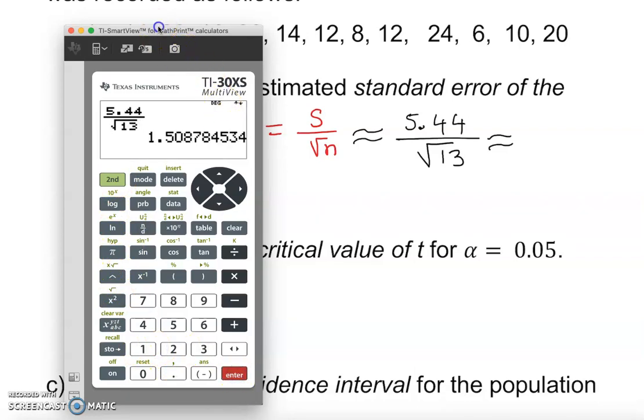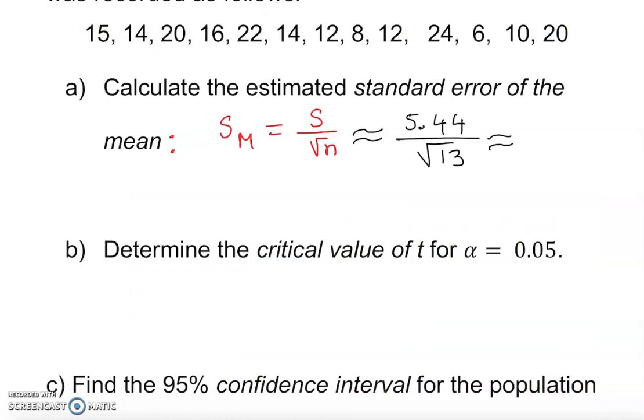Enter, 1.51 approximately. So 1.51, that is the estimated standard error of the mean.